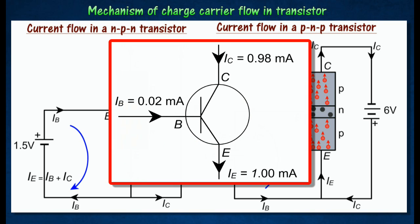Thus, a small current IB flowing through the base B will combine with IC to produce a large current IE flowing through the emitter.